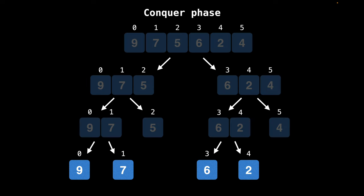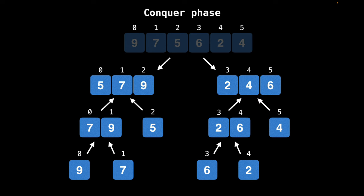For the conquer phase, just focus on the lowest segments first. What we want to do is sort the left and the right segments into a new list as we recurse upwards. So in the left branch, we would sort seven before nine. And in the right branch, we would sort two before six. After sorting the bottom layer, we move up and merge the segments seven and nine with five and two and six with four. And repeat the same process for the final segments.